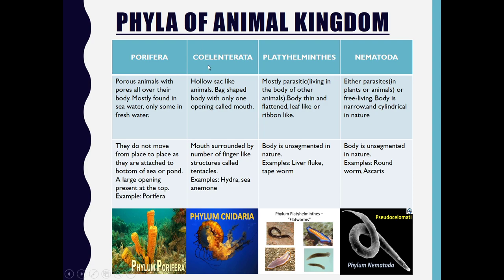Coming to the second phylum, Coelenterata, also known as Cnidaria. They have a hollow sac-like structure in the body — bag-shaped body — with only one opening called the mouth. The mouth is surrounded by a number of finger-like structures called tentacles. Examples coming under this category are Hydra and sea anemone.